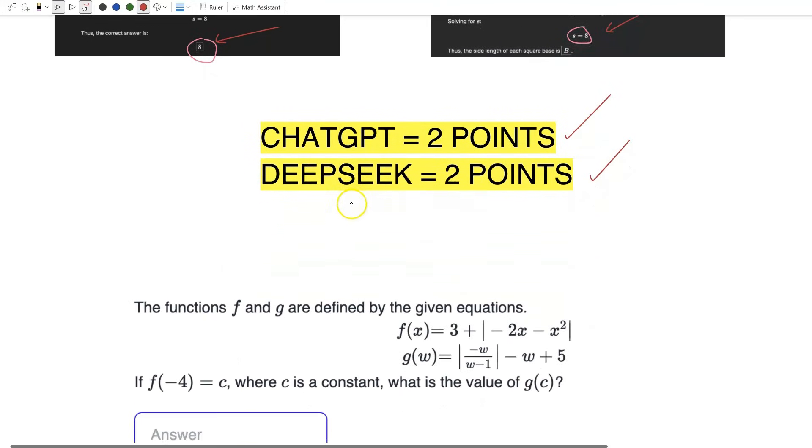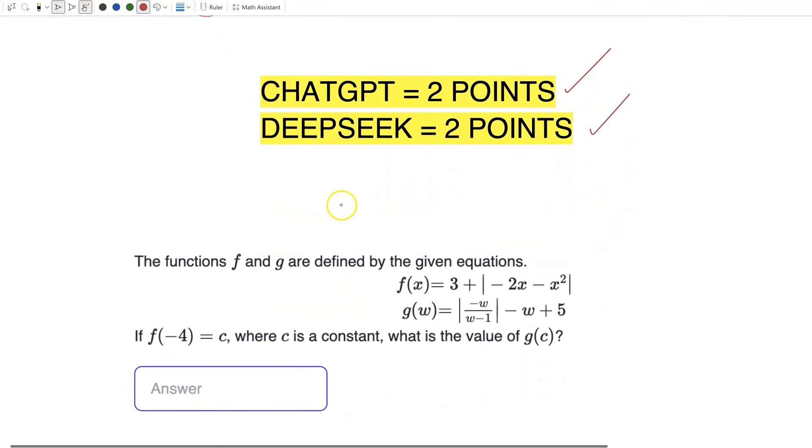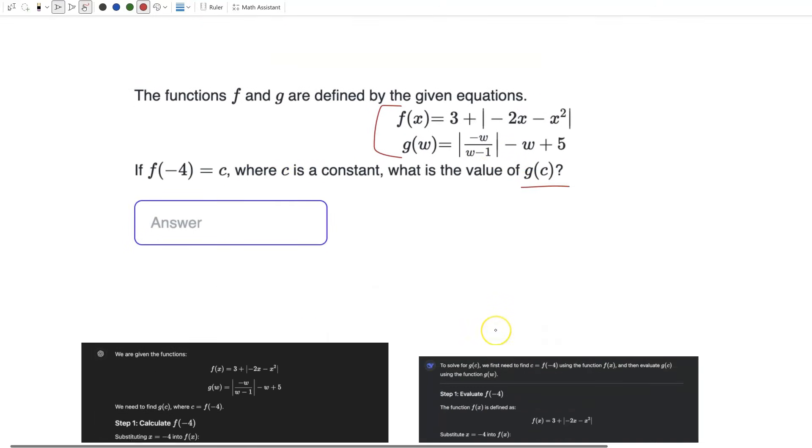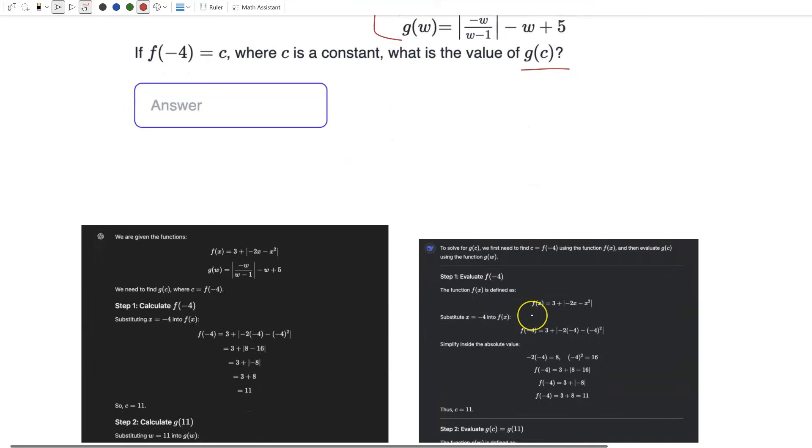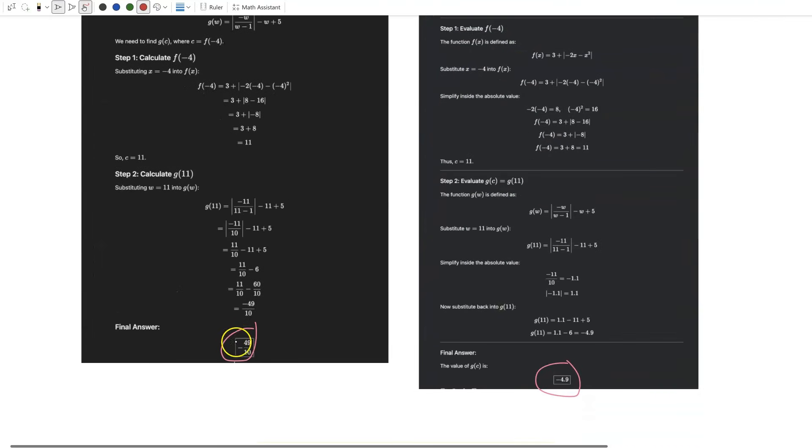Here's our last SAT math problem. We have the functions f and g defined, some interesting equations there. If f of negative 4 equals c, where c is a constant, what is the value of g of c? We have ChatGPT's response and DeepSeek's response, and they both get the same answer.